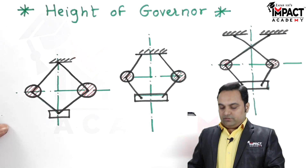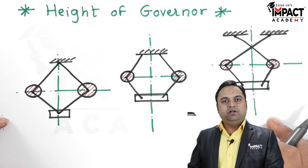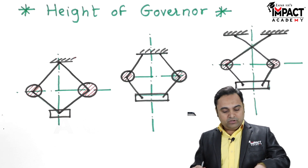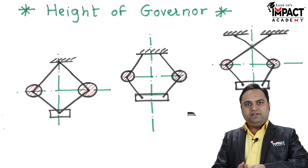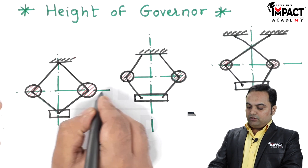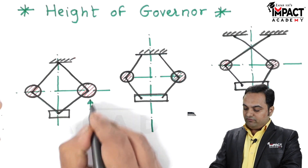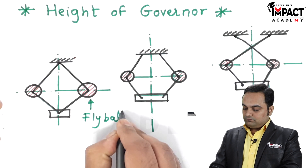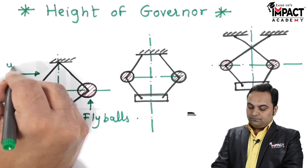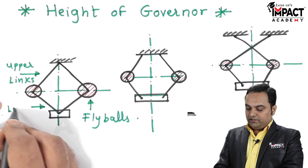Here are three different configurations of a governor. I have drawn a simple governor, also called as the Watt's governor. Height of governor is basically defined as the vertical distance between the center of fly balls — these circular balls are called as the fly balls — and these are the upper links, and similarly we have the lower links.